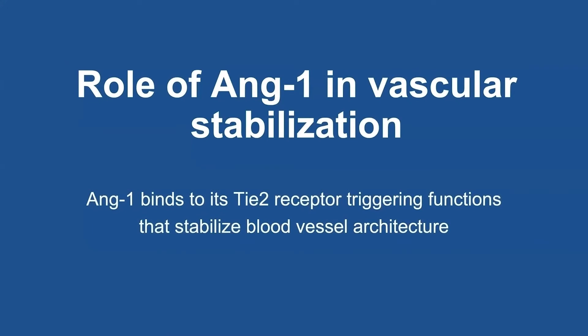So how is this process happening? We think it's driven in large part by angiopoietin 1 and angiopoietin 2 and the ratio between these two ligands for TIE2. Overall, think of angiopoietin 1 as triggering activation of TIE2 and stabilization of blood vessel architecture.